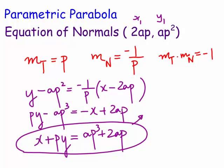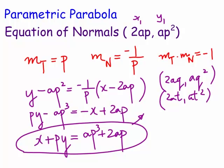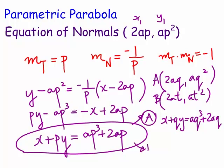At point (2aq, aq²), the normal is x + qy = aq³ + 2aq. At point (2at, at²), it's x + ty = at³ + 2at. So the normal's equation depends on the parameter value at the point.